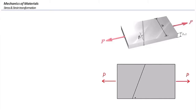Before talking about the stress at that point, let me introduce the concept of the stress element. A stress element represents the state of stress — either normal or shear — at a certain point within a body or structure, and it can be defined for two-dimensional or three-dimensional elements. We start with two-dimensional and later expand to three-dimensional stress elements.